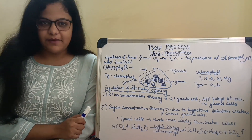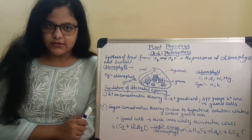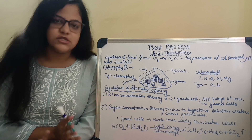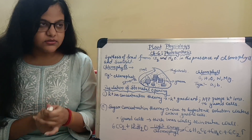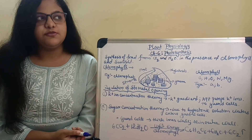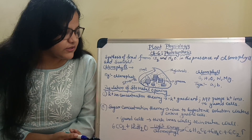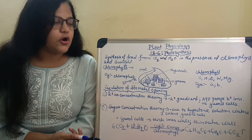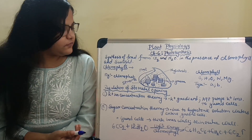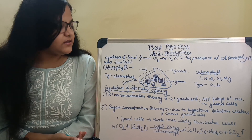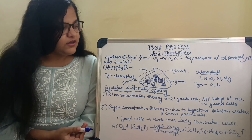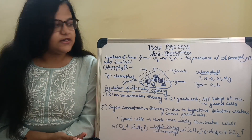Hello students! Welcome back to your bio class. Today we are dealing with the third chapter of plant physiology which is photosynthesis. Now we are very familiar with this concept. Photosynthesis is the synthesis of food and starch from CO2 and H2O in the presence of chlorophyll and sunlight. But we only know this definition — in this chapter we will learn some details about photosynthesis.